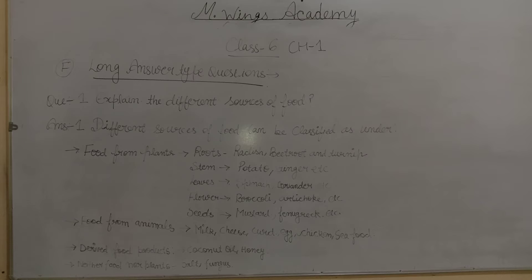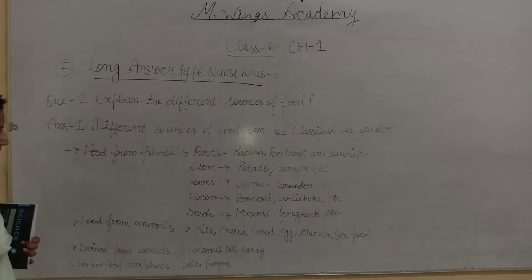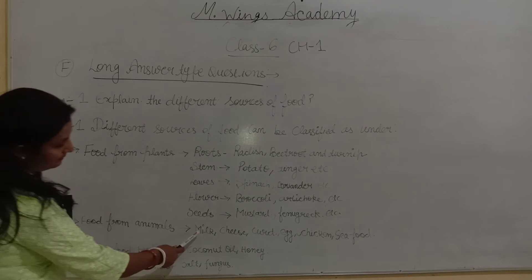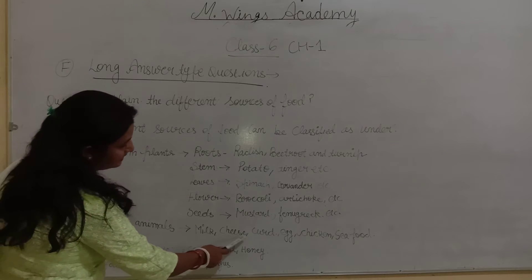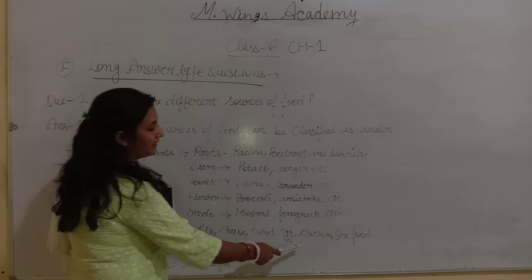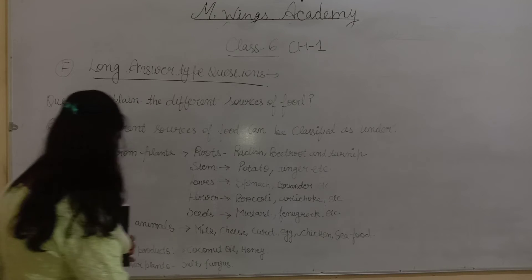Food from animals — what do we get from animals? You will write milk, cheese, curd, eggs, chicken and seafood.